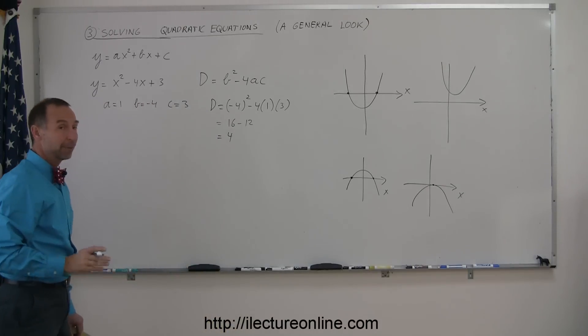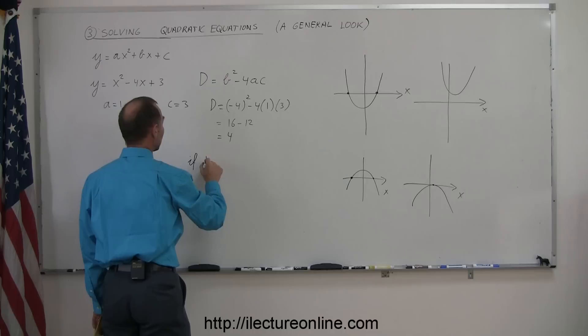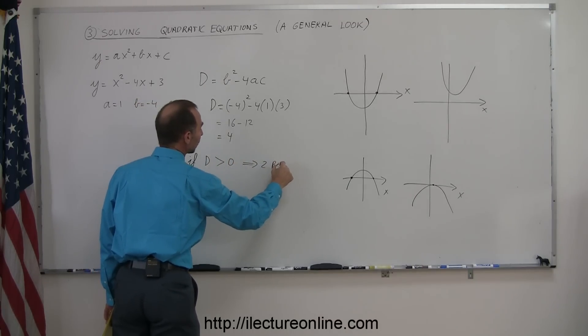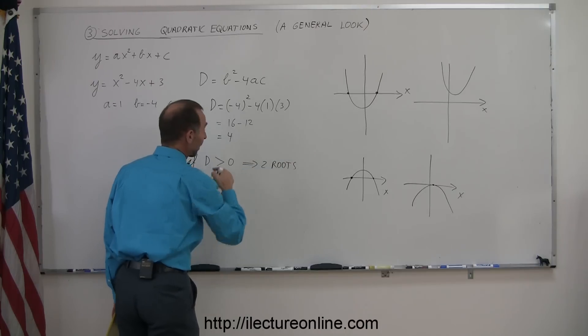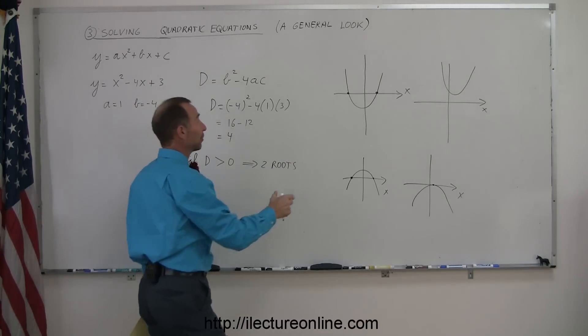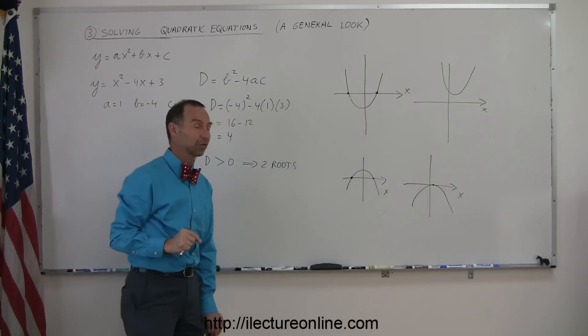What does that mean? Well, what that means is if the determinant is greater than 0, that means you'll have two roots. So in this case, our example, d is indeed greater than 0, it's 4, which means that I'll have a parabola that either looks like this or that looks like this, where it crosses the x-axis twice.